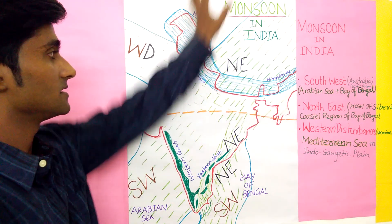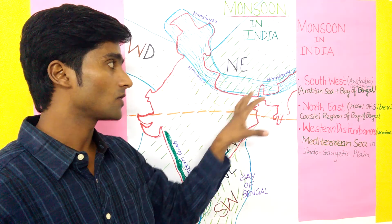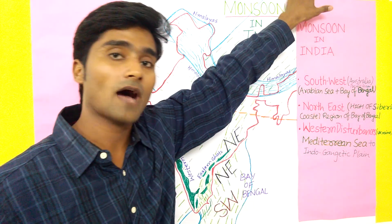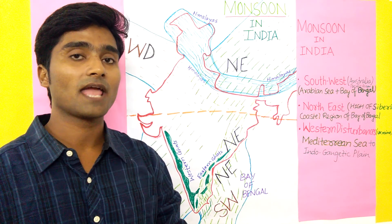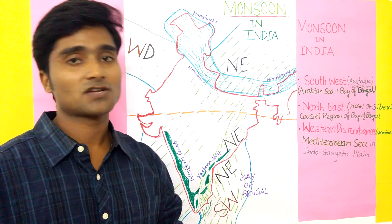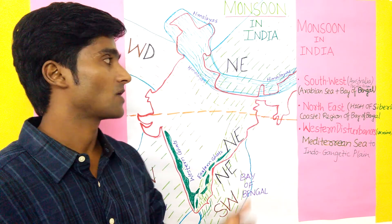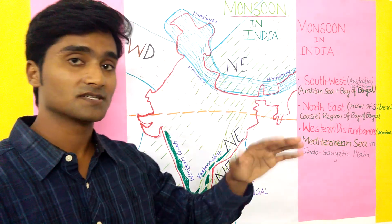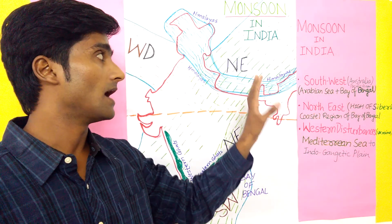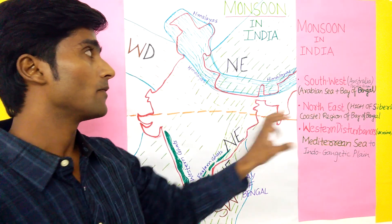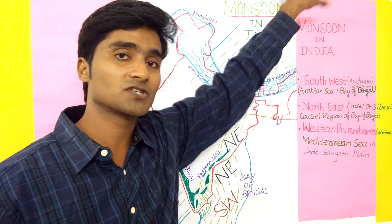Now the Northeast monsoon comes from the high pressure area over Siberia. Why high pressure over Siberia? Because of very low temperature there — minus degree temperatures in Siberia, Russia. Because of cold weather and low temperature, there is high pressure over Siberia.